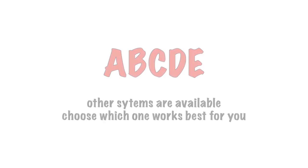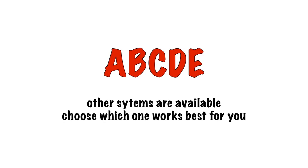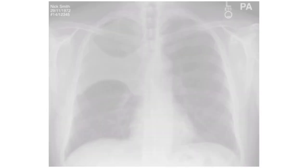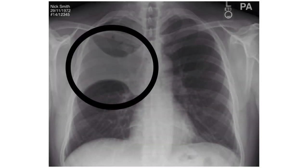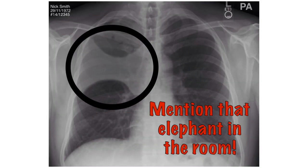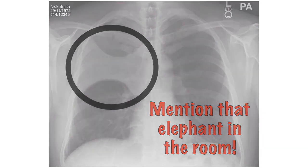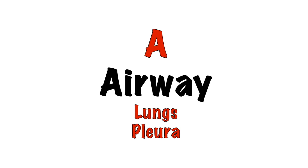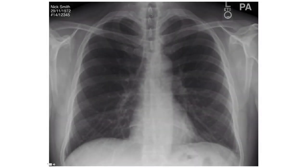We'll be using the ABCDE approach to chest X-ray interpretation. If there is a clear area of abnormality, don't hesitate to highlight it first, but remember to go through systematically afterwards to check you haven't missed anything. A stands for airway, lungs and pleura. Start with the trachea and work your way down — the trachea contains air so it is blacker than its surroundings.